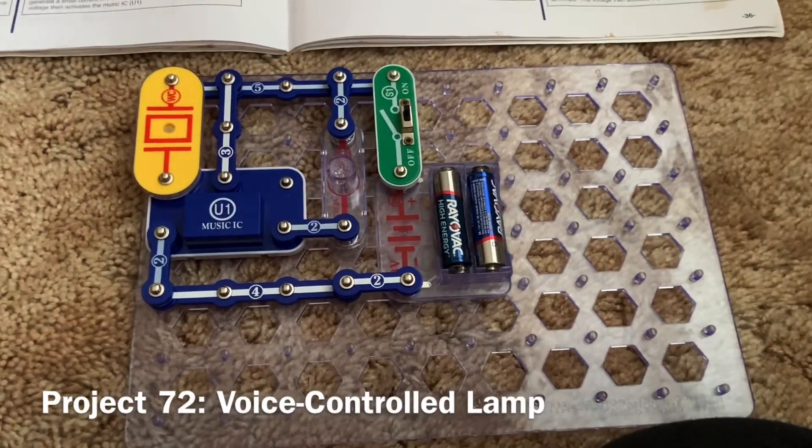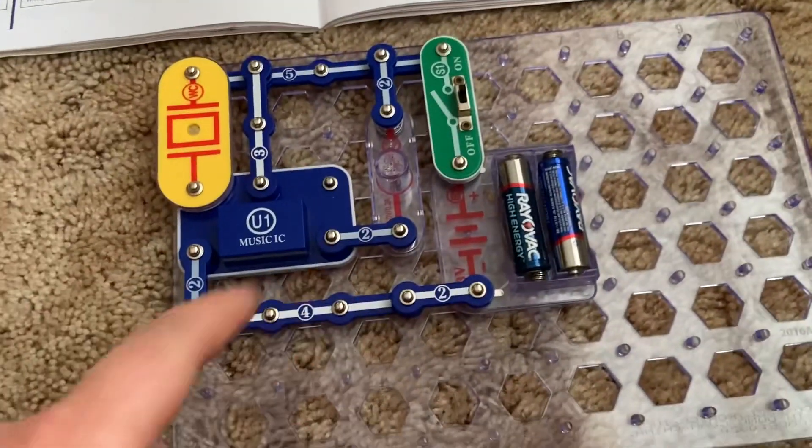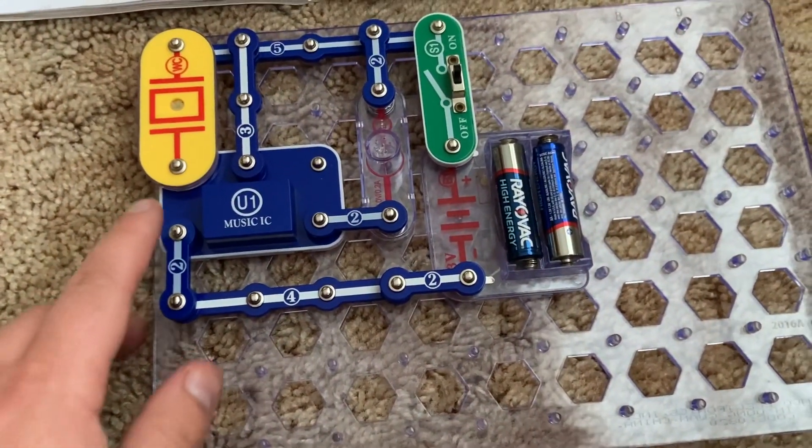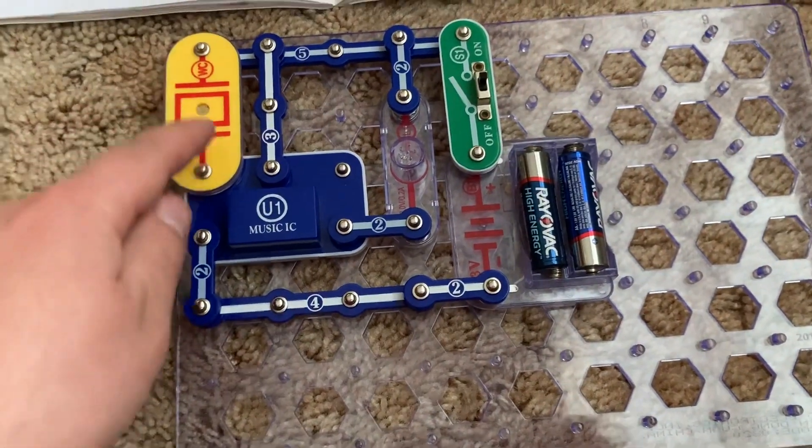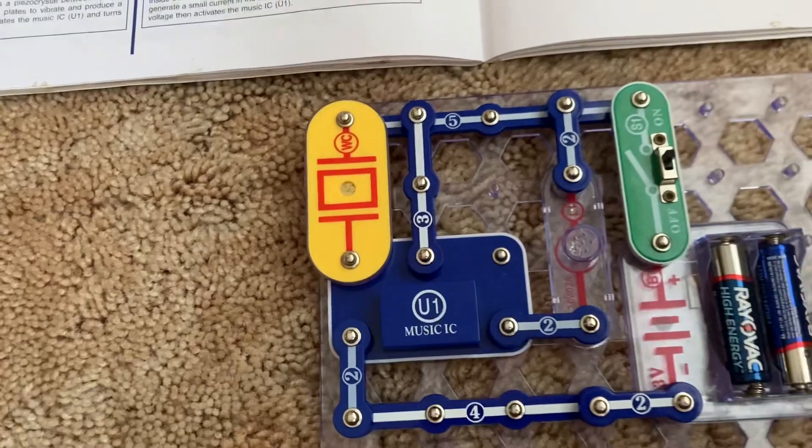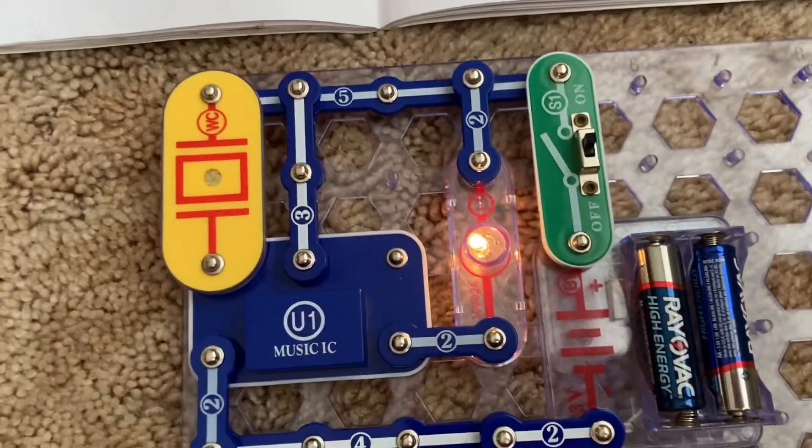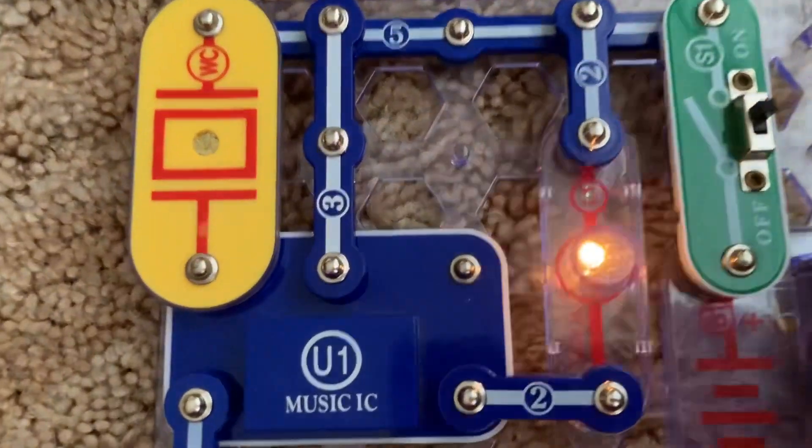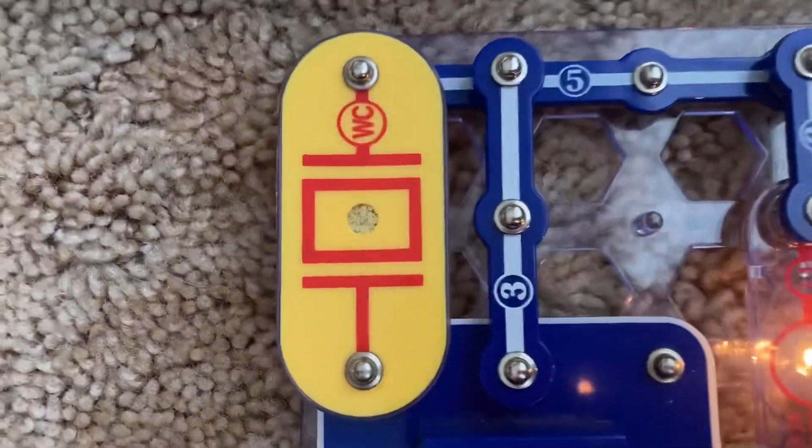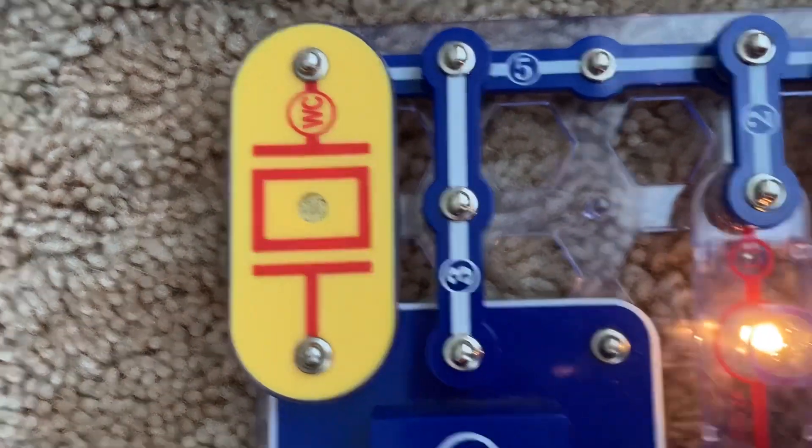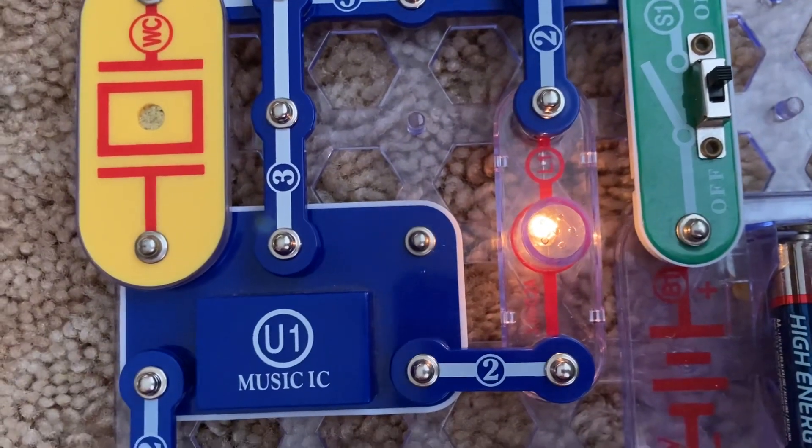For voice controlled lamp, I removed the photoresistor and inserted the whistle chip between points A and B here. And then when I tap the whistle chip, the music integrated circuit starts playing. You can hear the faint music and the lamp comes on.